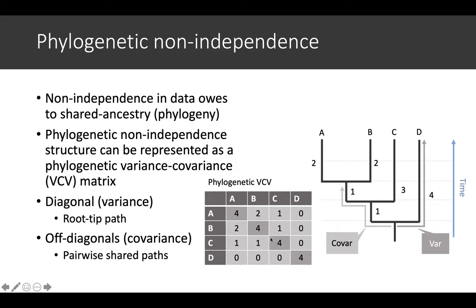The off-diagonals are the pairwise shared paths between the tips. Between B and A, they share two units of time from the root to that common ancestor of A and B, because that's one and two.